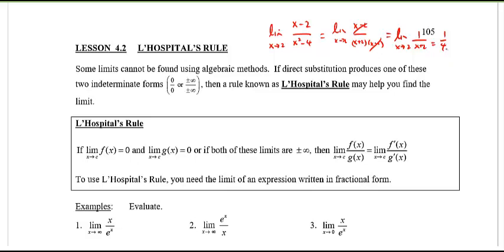L'Hôpital's Rule says this: as long as you have a fraction, and if the limit of f(x) as x approaches c equals 0 — meaning the numerator — and the limit as x approaches c of g(x) equals 0 — that's the denominator — or both of these limits are either positive or negative infinity, then the limit as x approaches c of f(x) over g(x) equals the limit as x approaches c of the derivative of the numerator, f'(x), divided by the derivative of the denominator.